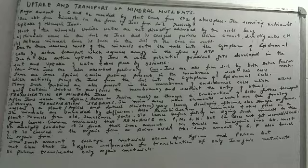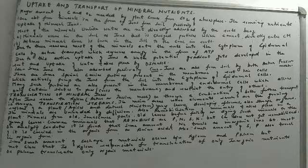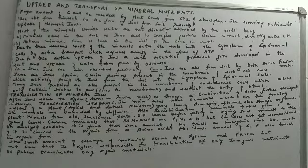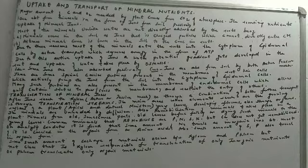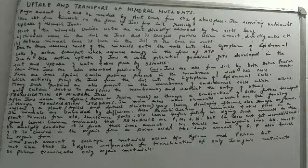Due to this active uptake of ions, a water potential gradient gets developed in the roots. Minerals dissolve and are entering inside the roots, so a water potential gradient will develop, and uptake of water will then take place by osmosis. Mineral ions are generally dissolved in water, but they will only enter by active uptake or active transport method.